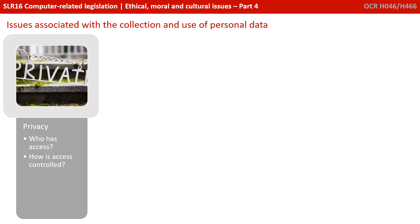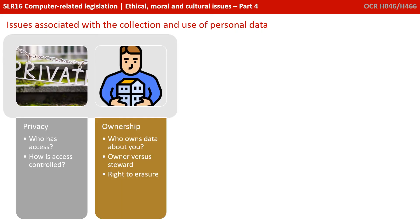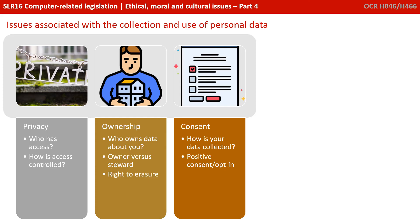Some of the things you might like to think about here. First, privacy — who has access to this information and how is access to that information controlled? Ownership — who owns the data about you? This is the concept of the owner, you, versus the steward, the company or organisation holding it. And do you have a right to get that data removed? Consent — how was your data collected in the first place? Did you have to positively consent or opt in, or was it somehow collected without your knowledge?